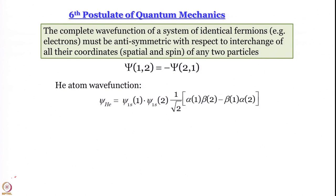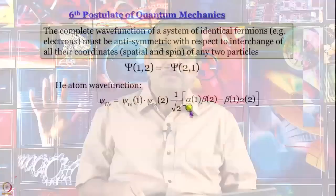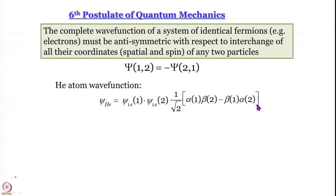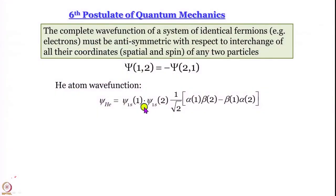The only antisymmetric spin wave function we have is [α(1)β(2) − β(1)α(2)]/√2. Only this antisymmetric spin part can be multiplied with the symmetric spatial part to give an acceptable total wave function. All other spin wave functions are not compatible with ψ₁ₛ(1)ψ₁ₛ(2), because we need an antisymmetric total wave function.